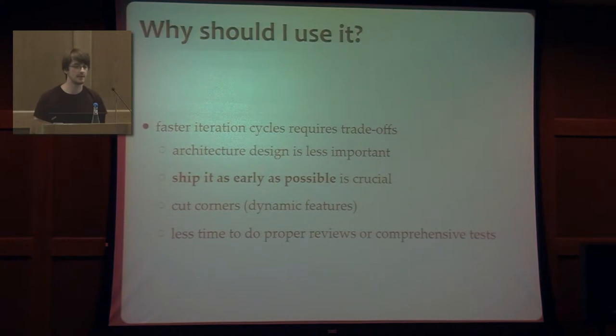And these things come with a trade-off in the sense that faster iteration cycles means that we are not having a very good design or having a very good design is not a priority anymore in some of our projects. And shipping our software faster is a virtue rather than thinking about what we need to implement correctly. And in order to do that, we are relying on tricks like cutting corners, starting to use features that don't necessarily make our implementation clean but just provide us more time to release more features. And this means that we have less time to do proper reviews and to write comprehensive tests.